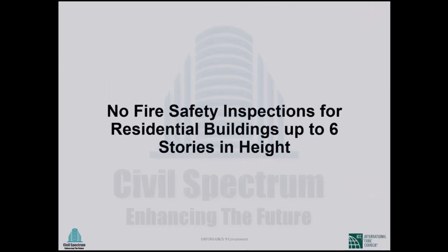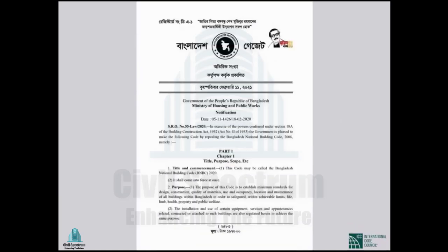We found from our stakeholder consultations that there is no fire safety inspection for residential buildings up to six stories in height. For taller buildings, Bangladesh Fire Safety and Civil Defense has inspections, but for shorter buildings there is no inspection — and that needs to be corrected. The next speaker will provide an introduction to the Bangladesh National Building Code new edition.